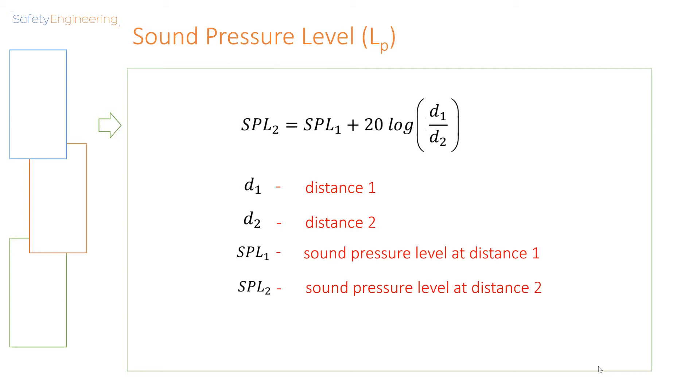Let us now break down the equation. We have D1 which is the distance 1. We have D2 which is the distance 2. We have SPL1 which is the sound pressure level at distance 1, and we have SPL2 which is the sound pressure level at distance 2.